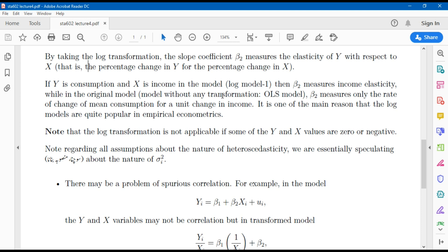While in the original model, the model without any transformation or log transformation, beta 2 measures the rate of change of mean consumption for a unit change in income. It is one of the main reasons that the log models are quite popular in empirical econometrics.